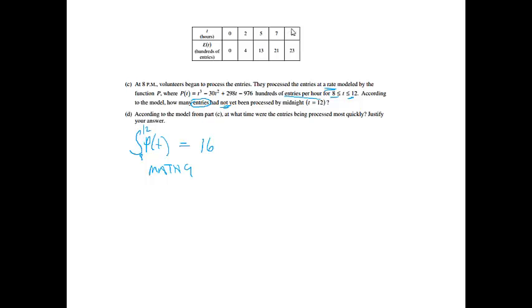All righty, so that's how many have been processed. We know at 8 o'clock, there were 2,300 entries. So what we can do, my answer is going to be 23 minus how many they were able to process. So there were 700 entries that have not been processed yet. This was worth two points. If you set up an integral, that was worth one point. And then if you correctly got the answer, that would be another point.